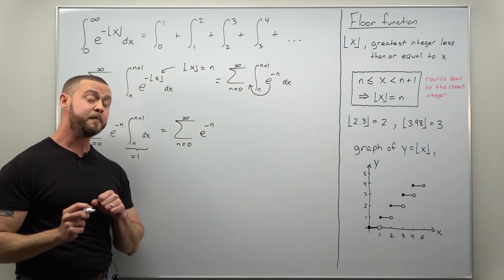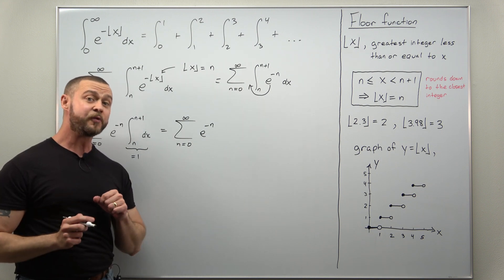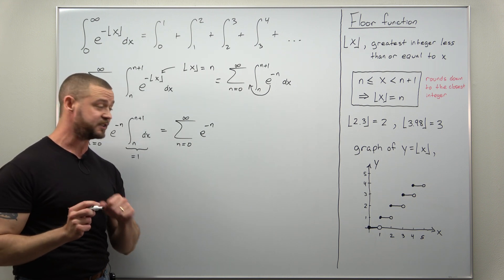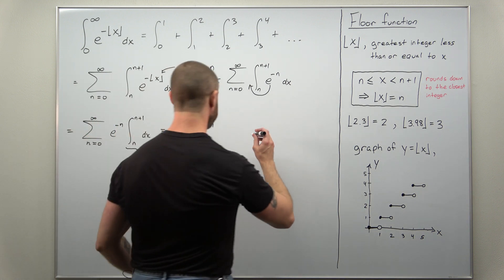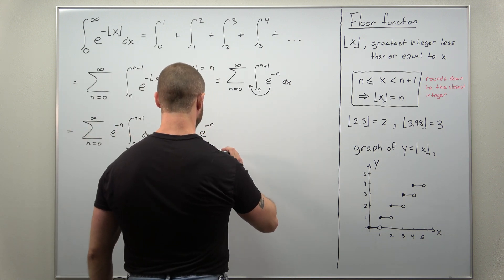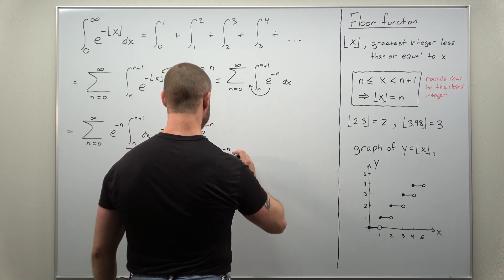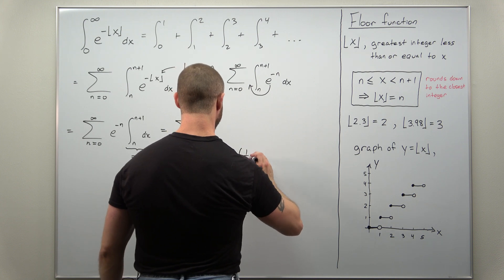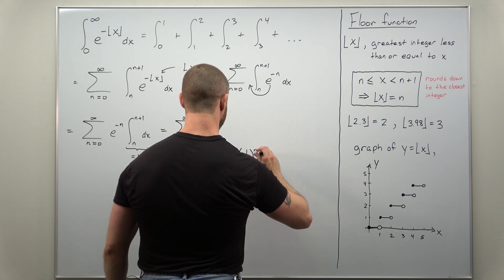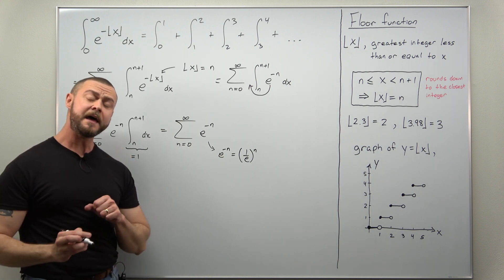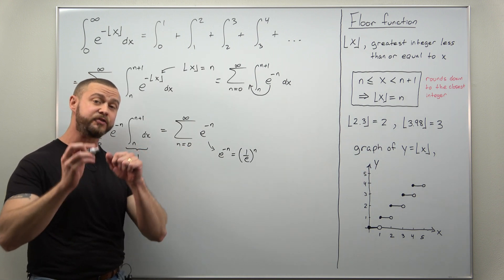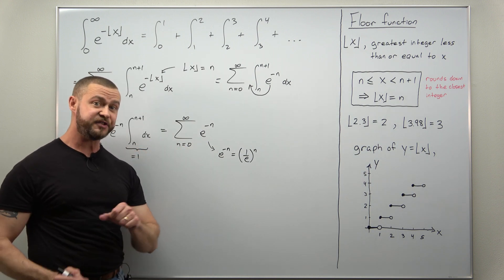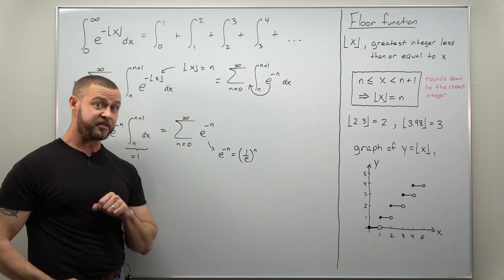And if you are familiar with basic results from Calculus 2 you can recognize that as a geometric series. Let's go ahead and rewrite the term here. E to the negative n, we can rewrite that as 1 over e all to the nth power. And that now makes it look more like the term for a geometric series, a number to the nth power.